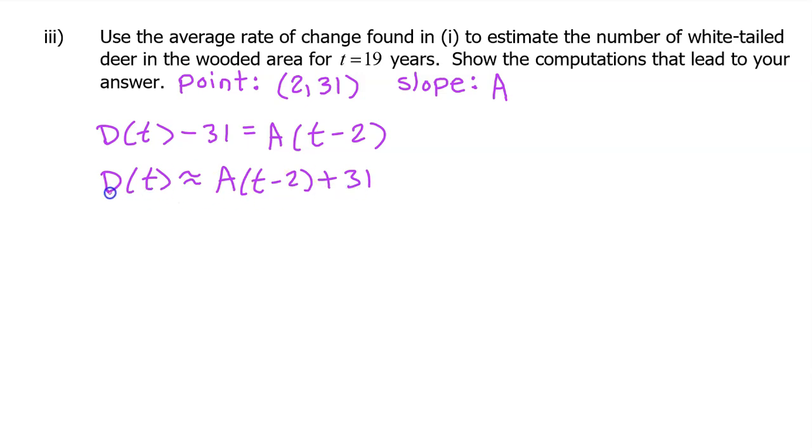Now we can use this secant line equation to estimate the number of white-tailed deer at t equals 19 years. In other words, we can estimate the value of d at 19, which will be approximately equal to a times 19 minus 2 plus 31.